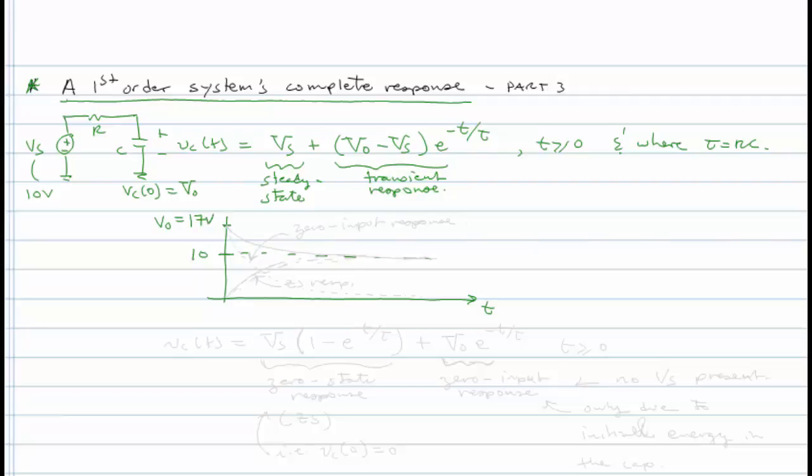So initially, at time zero, we're going to have a VCT evaluate to 17 volts, because we'll have VS plus VO minus VS or just VO. Asymptotically, as the exponential E to the minus T over tau decays to zero, the transient response will go away and we'll settle out at VS. So we'll have a response that will look like this.